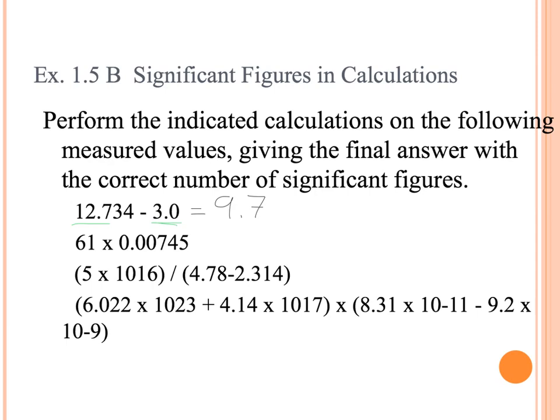Multiplication says, how many sig figs does each number have? The 61 has two sig figs, 0.00745 has three sig figs. My answer is only allowed to have two. So we put that into our calculator, we round it, 0.45. And there's no units on any of these. They're just numbers.